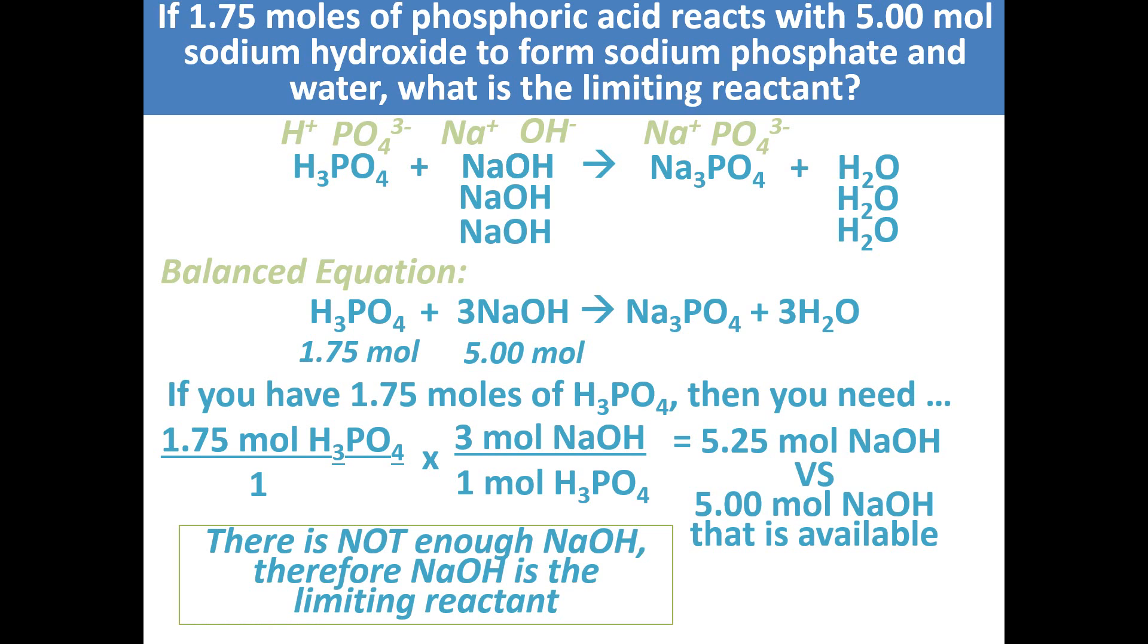This tells us that sodium hydroxide is going to run out faster than phosphoric acid in the reaction. When we finish off this reaction, there will be leftover phosphoric acid as soon as the sodium phosphate and water is created. And that's it.